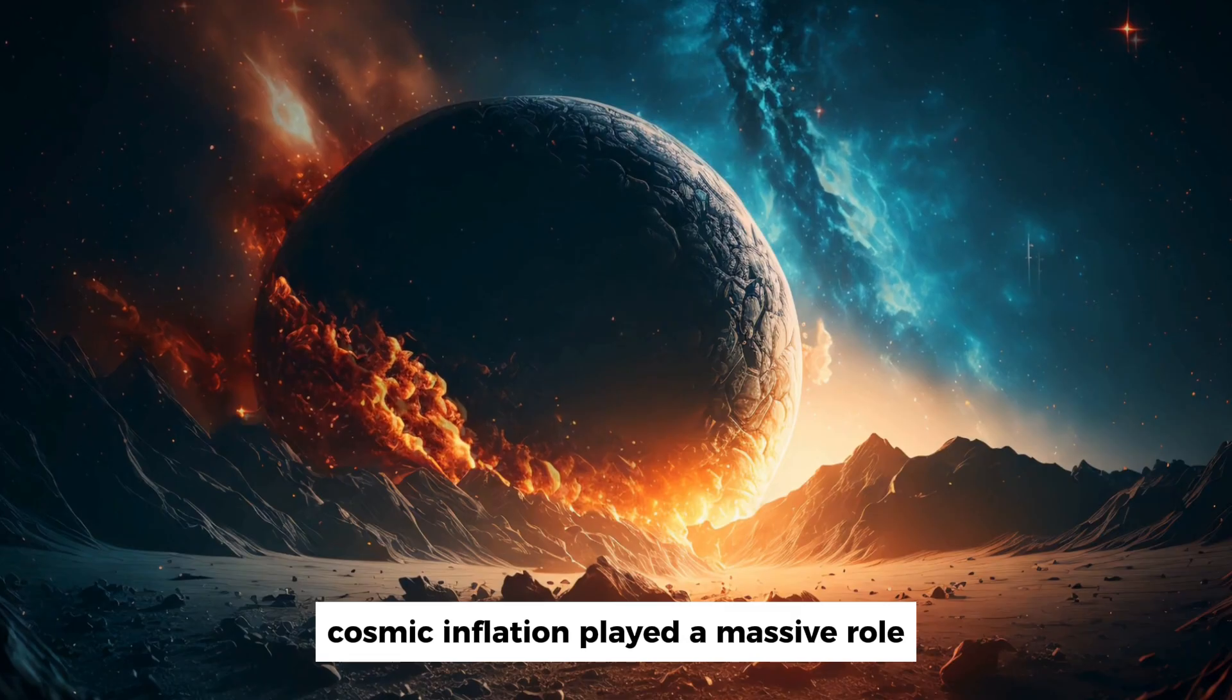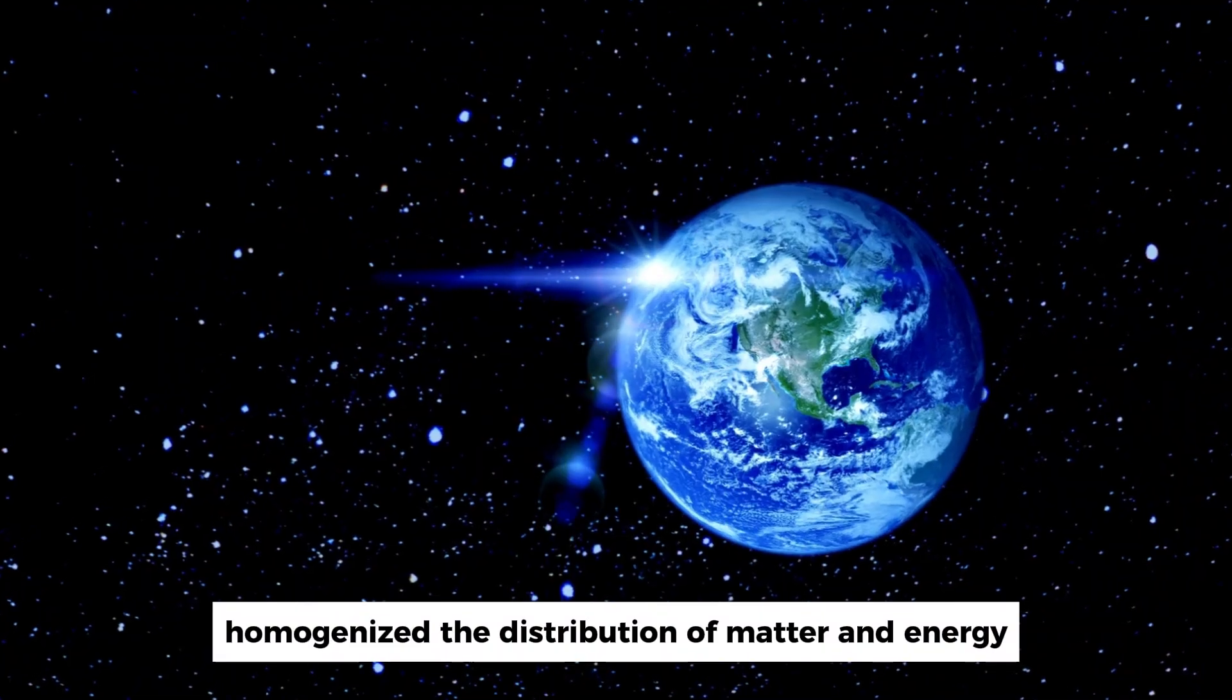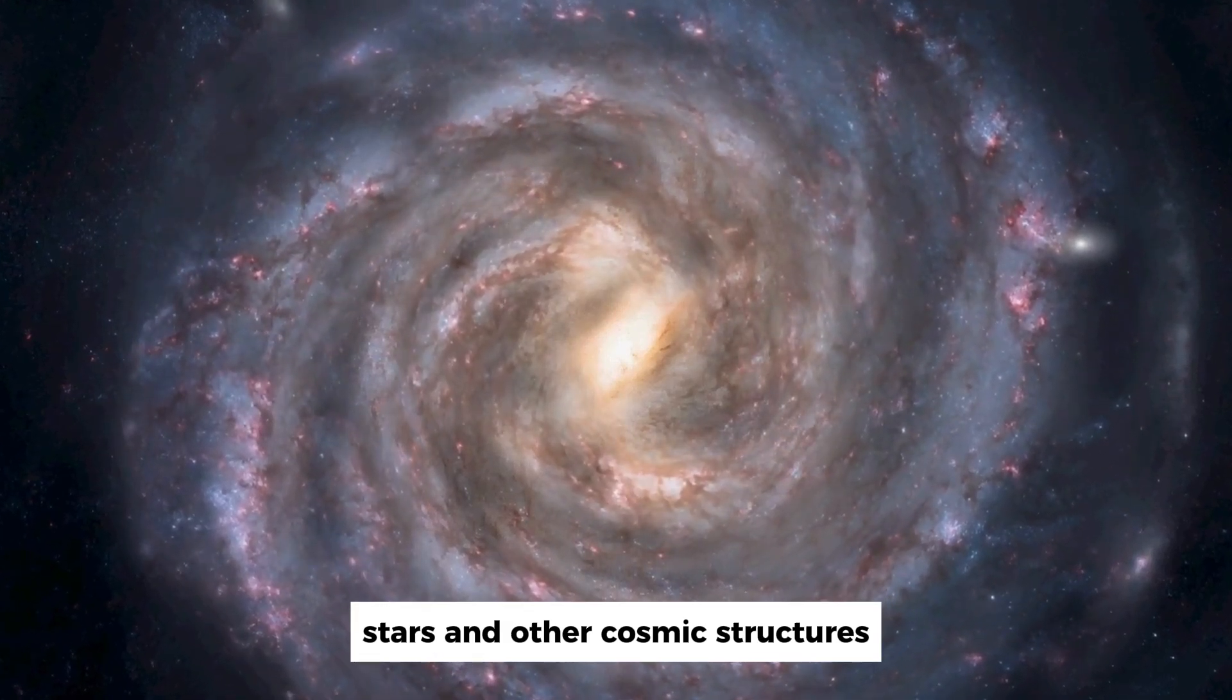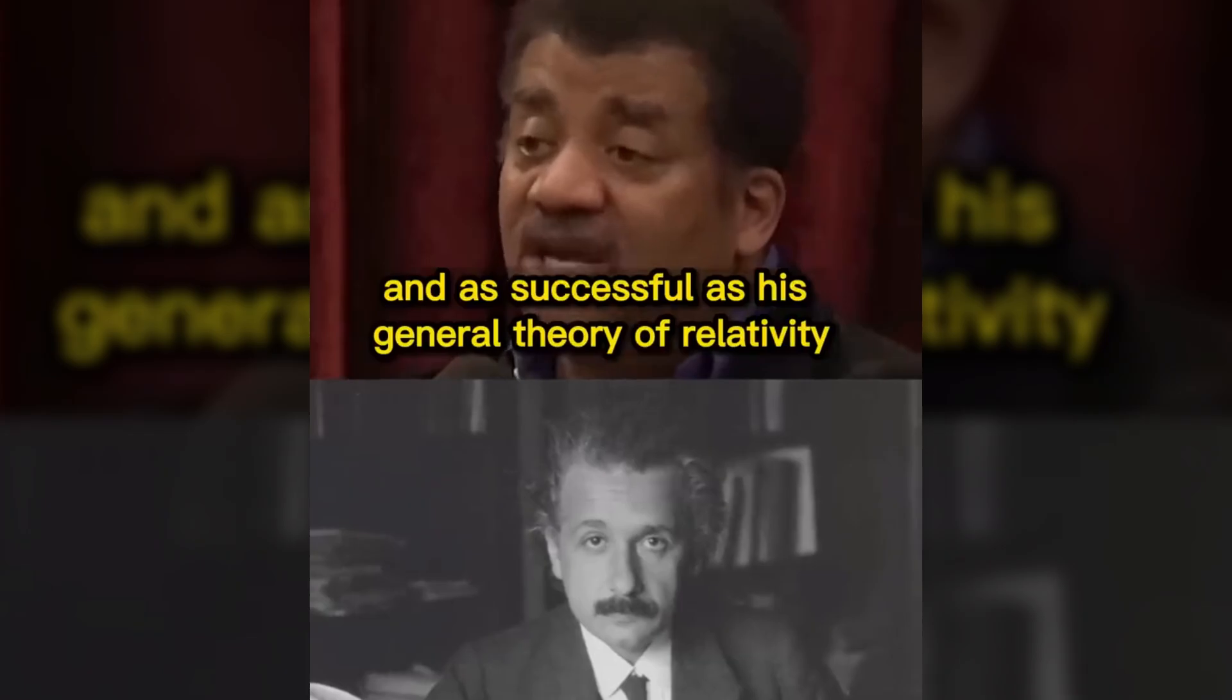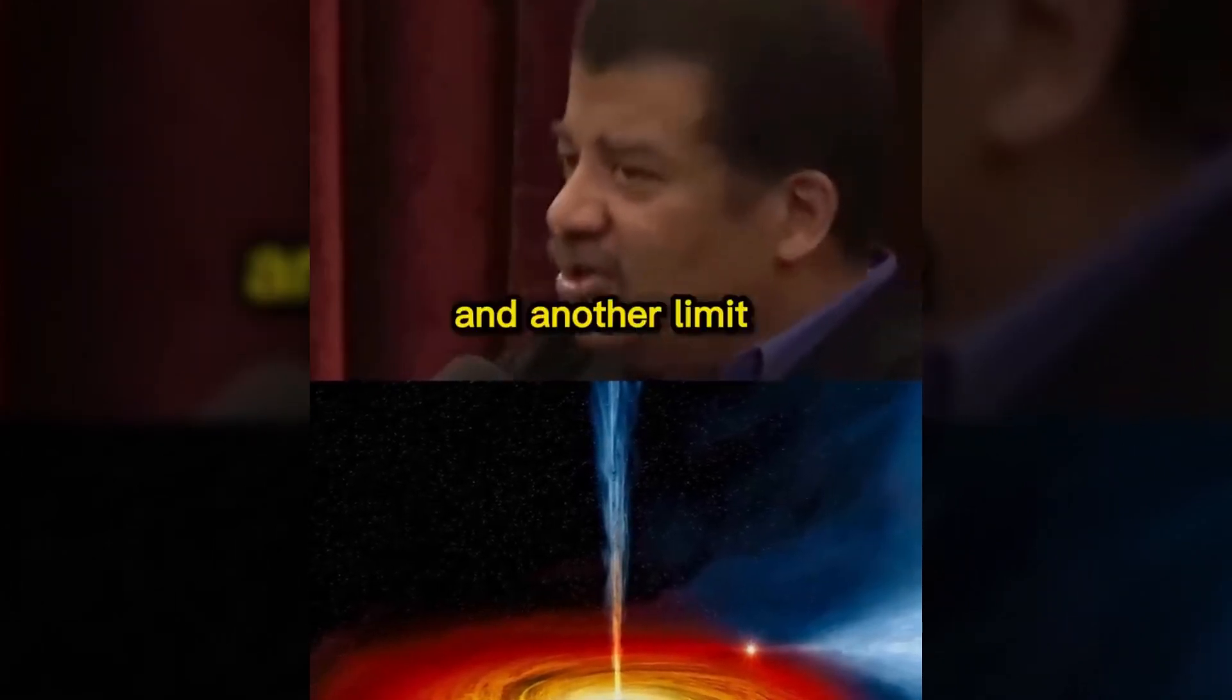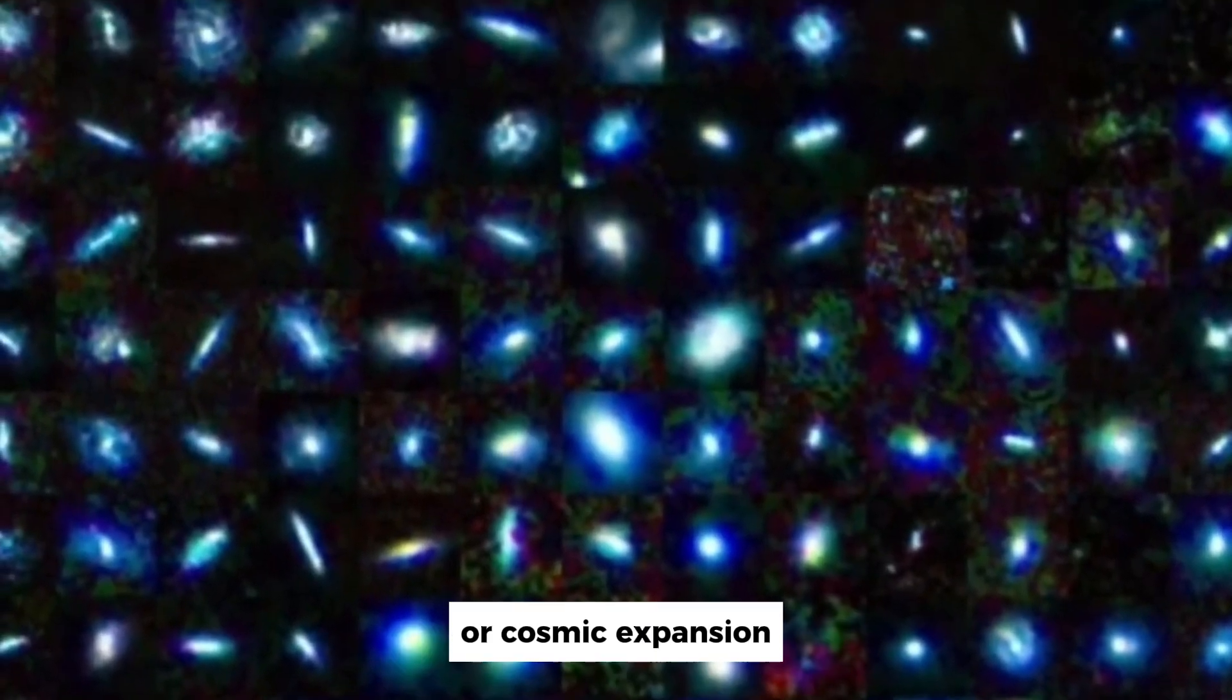Cosmic inflation played a massive role in shaping the large-scale structure of the universe. It smoothed out irregularities, homogenized the distribution of matter and energy, and set the stage for the subsequent formation of galaxies, stars, and other cosmic structures. As brilliant as Einstein was and as successful as his general theory of relativity has been, it has limits. One limit is the center of a black hole, and another limit is the very birth of the universe.